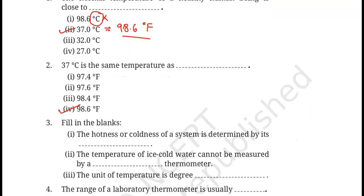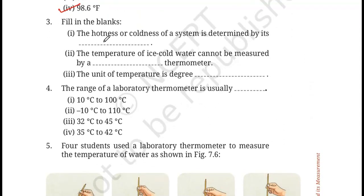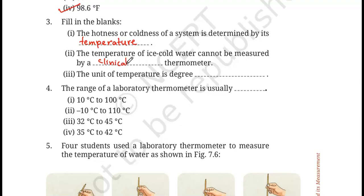Question 3 is a fill in the blanks. The hotness or coldness of a system is defined by its temperature. The temperature of ice cold water cannot be measured by a clinical thermometer, because the clinical thermometer is designed for measuring the temperature of the human body, so we cannot use it for ice cold water or boiling water.